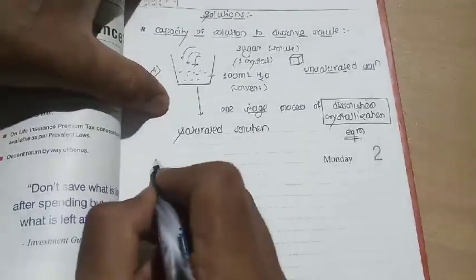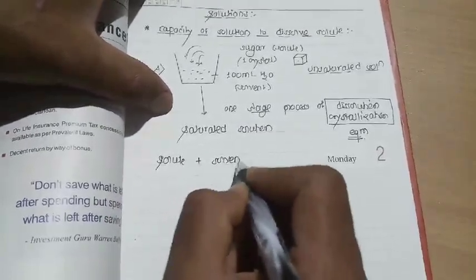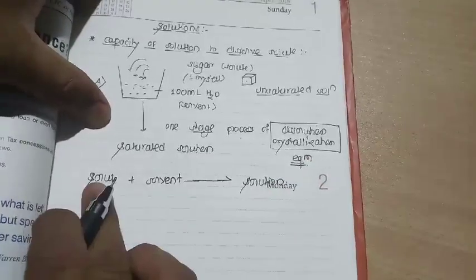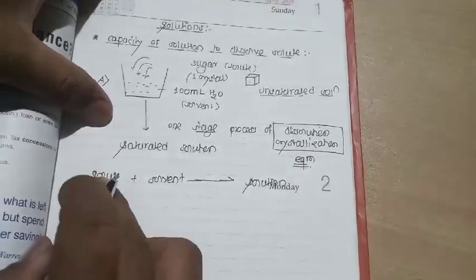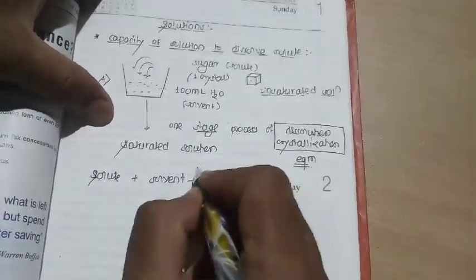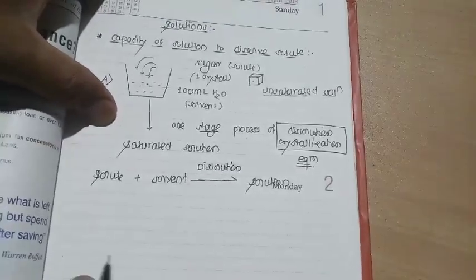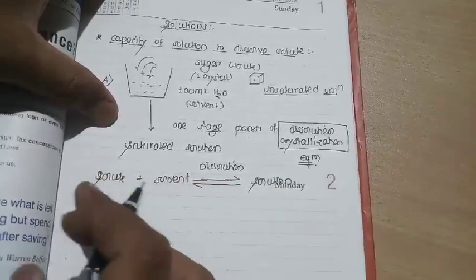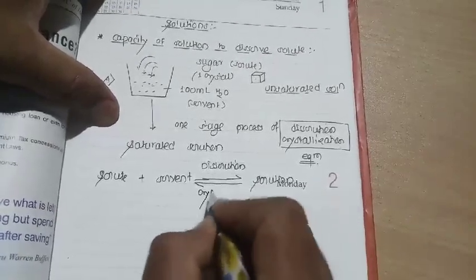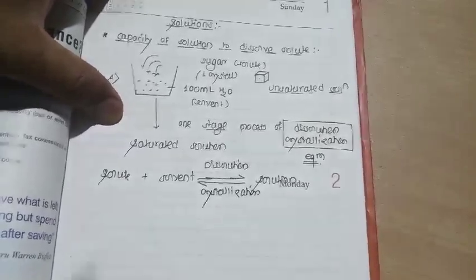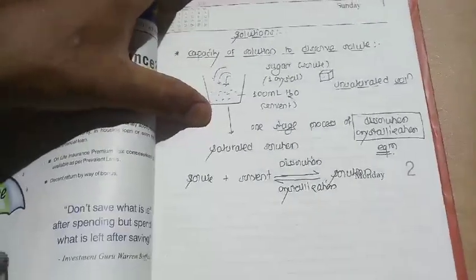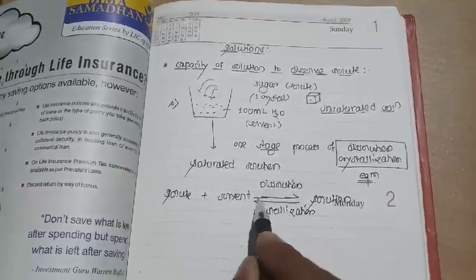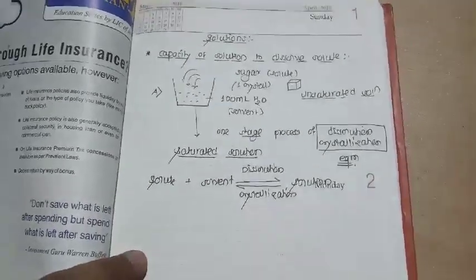In a saturated solution, if you consider solute plus solvent: in the forward direction, solution is formed — the solute dissolved — and this is called the dissolution process. In the reverse direction, solute comes out of solution, and that process is called crystallization. When dissolution and crystallization are at equilibrium, the solution is a saturated solution.